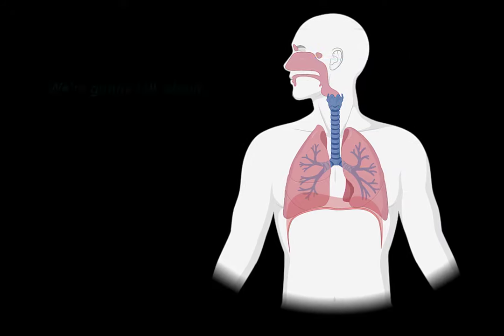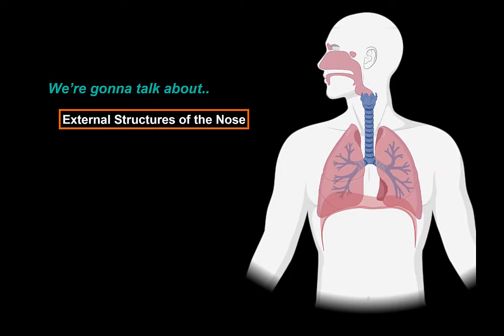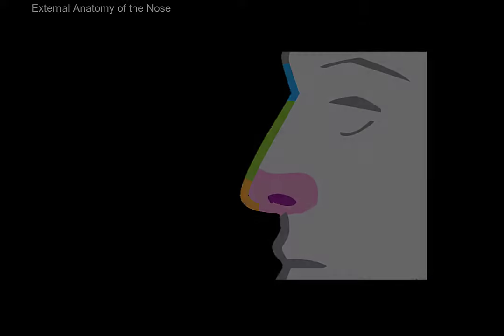In this video, we will start by covering the external structures of the nose, including its cartilage. Then we will split open the head and try to cover the anatomy of the nasal cavity, where we will be talking about the parts of the nasal cavity, the sinuses, and then talk about the layers of the nasal cavity wall. So let's now start with the external nose.